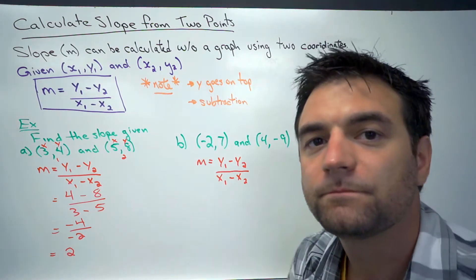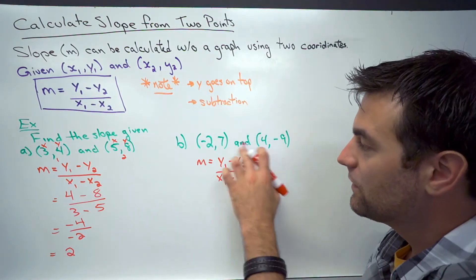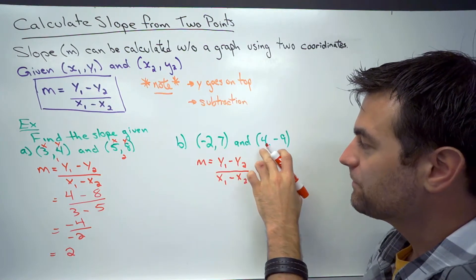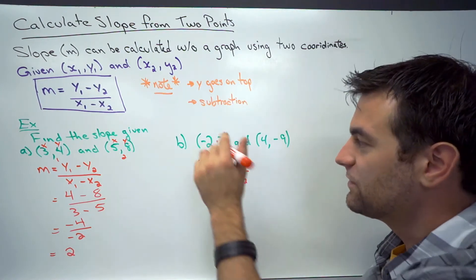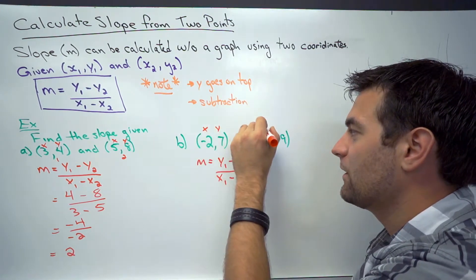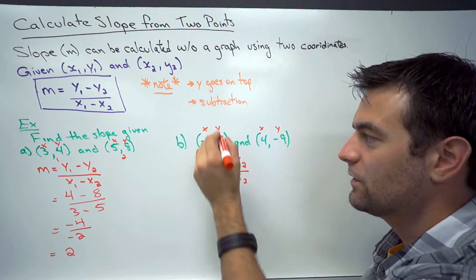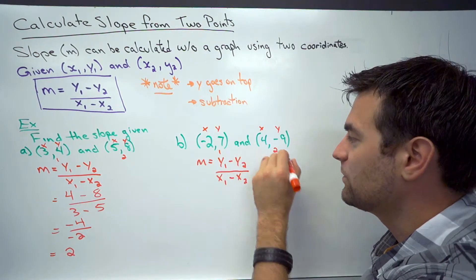My other example, I have negative 2 and 7 and 4 negative 9. So my two points get filled in. And again I'll put those little x, y's on top to help me remember the order. And that's point 1 and that's point 2.